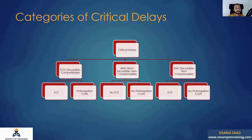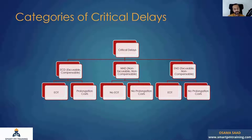ECD is Excusable and Compensable. When we refer to the term 'excusable,' it is related to time — so it's time related and often related to extension of time claims. For 'compensable,' we relate to cost. So when we say it's ECD — excusable and compensable — there is an EOT entitlement and there is a prolongation cost entitlement as well. The contractor should be reimbursed for the additional costs because of the time losses.